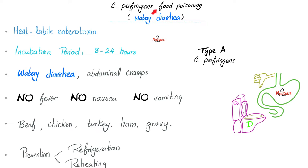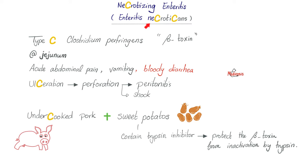Are soft tissue infections the only infections caused by Clostridium perfringens? No. Watery diarrhea can also happen — classic food poisoning. It's a heat-labile enterotoxin. The incubation period is 8 to 24 hours. No fever, no nausea, no vomiting — just crampy diarrhea. What do you eat to get this? Beef, chicken, turkey, ham, gravy — especially if the pork is undercooked, especially if combined with sweet potatoes. There is another severe form of GI disease known as necrotizing enteritis, caused by type C Clostridium perfringens — that one produces bloody diarrhea, unlike the watery diarrhea of food poisoning.